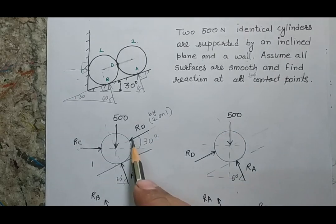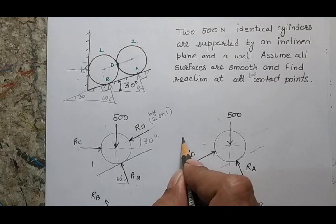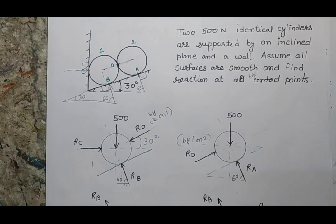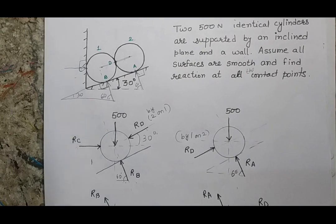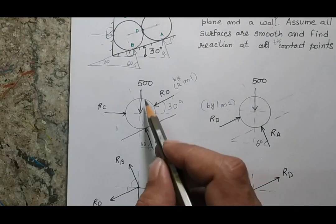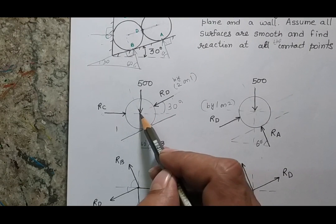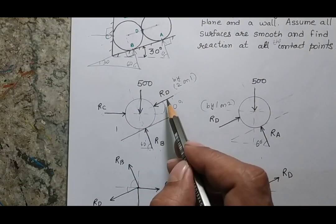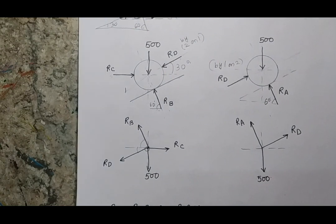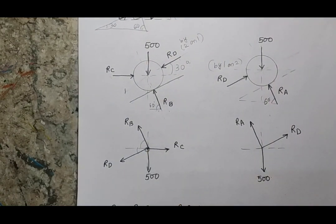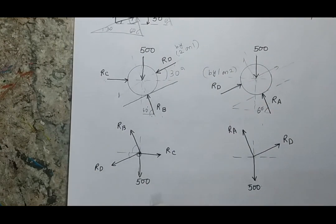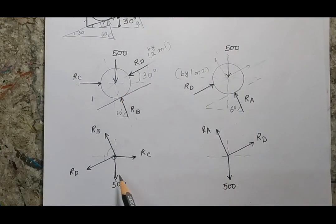Cylinder 2 applies a force on cylinder 1, and by Newton's third law, an equal and opposite force is applied by cylinder 1 on cylinder 2. With both free body diagrams ready, the next step is writing equilibrium equations. To simplify visualization of force components, all forces are transferred so they point away from the equilibrium point in both diagrams before resolving them.